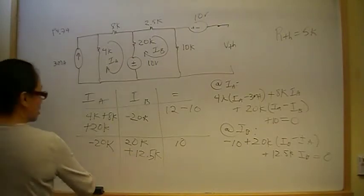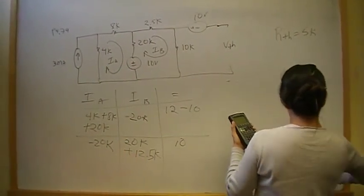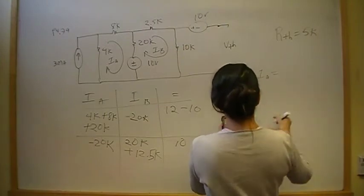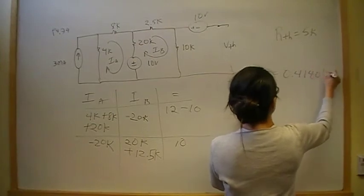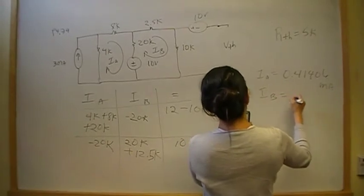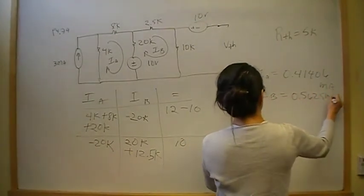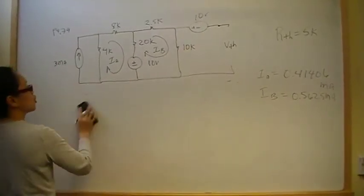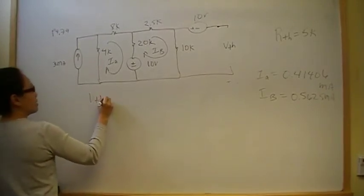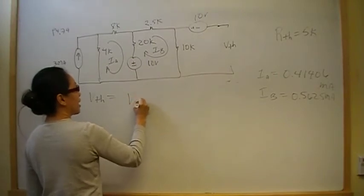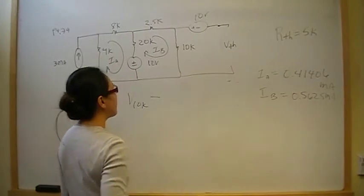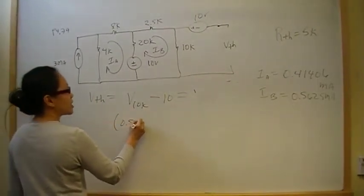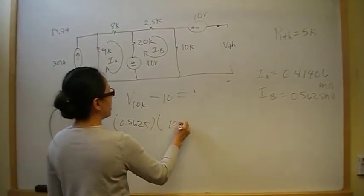Solving the system, Ia = 0.41406 milliamps and Ib = 0.5625 milliamps. We needed Ib because V-Thevenin is the voltage drop across the 10k resistor minus the 10-volt source. Going from the plus terminal toward V-Thevenin we experience a voltage drop, so V-Thevenin = V_10k − 10.